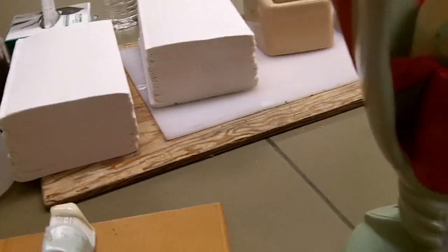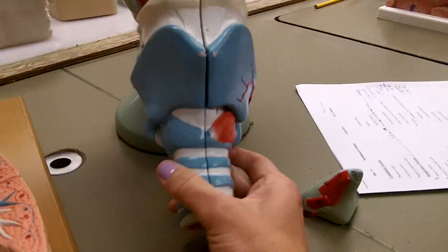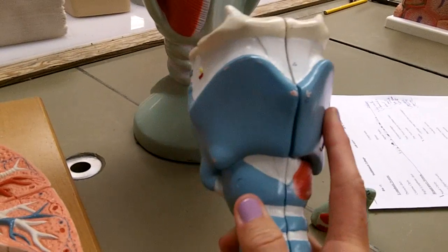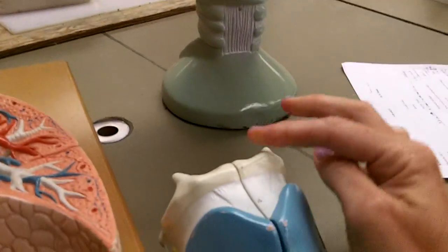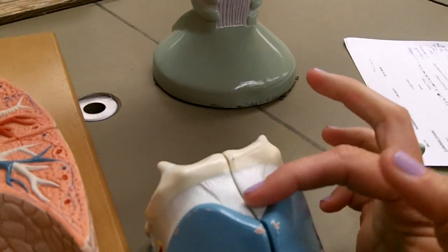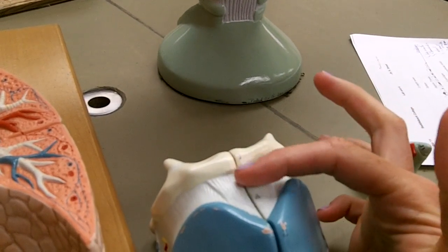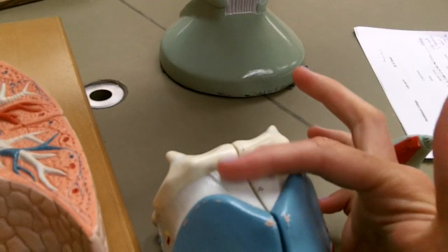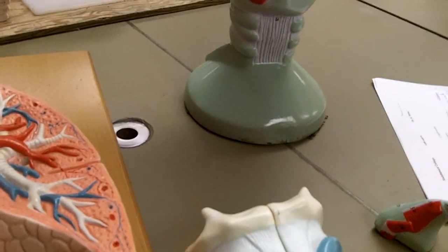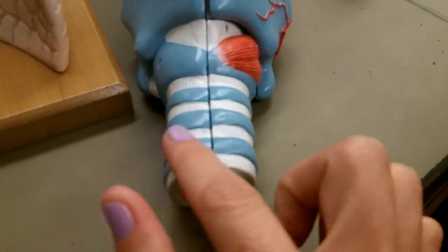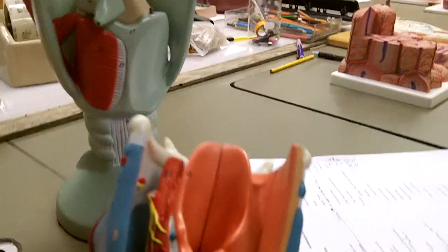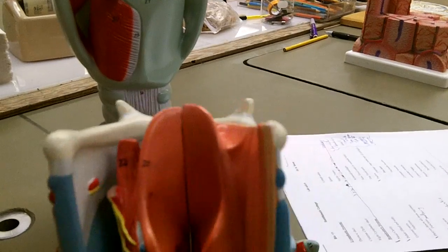Now, over here is another model. The same thing. We see the thyroid cartilage and the hyoid bone, and this is the ligament that goes in between them, the hyothyroid ligament. Down here you can see the tracheal C-rings again, and on the back side we see the epiglottis.